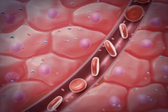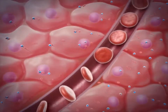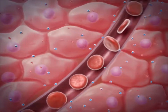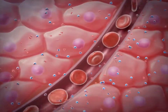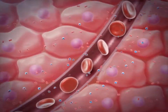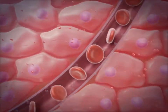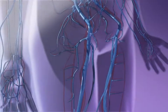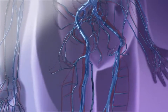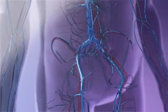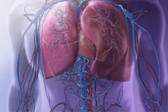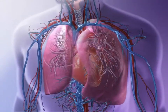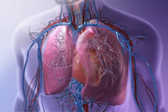Meanwhile, the waste product carbon dioxide diffuses into the bloodstream, where it is carried inside red blood cells and in plasma. The deoxygenated blood travels through the vasculature and back to the lungs, where carbon dioxide is expelled from the body.